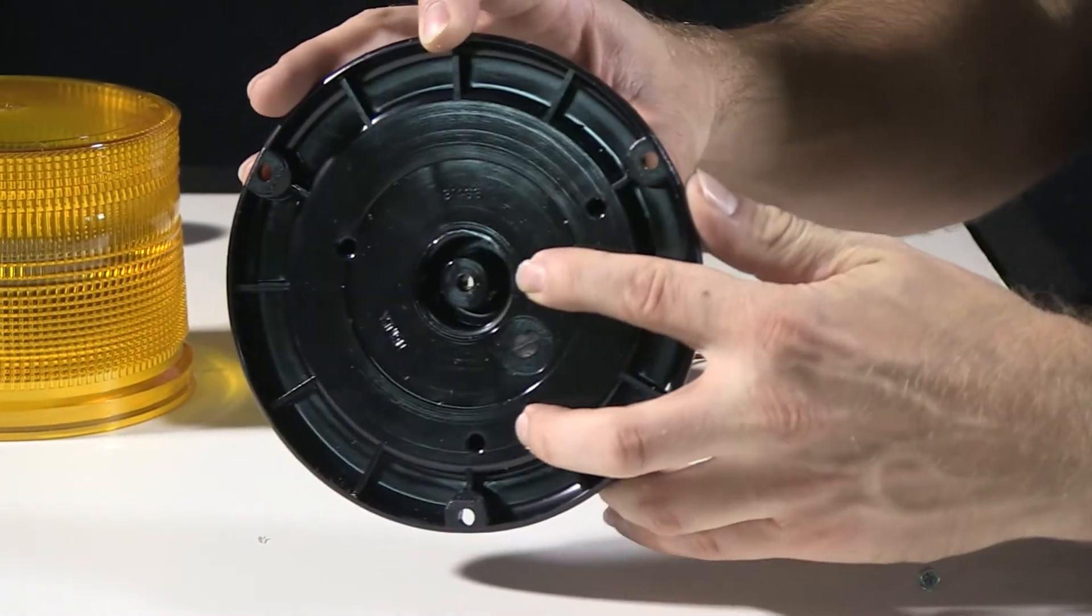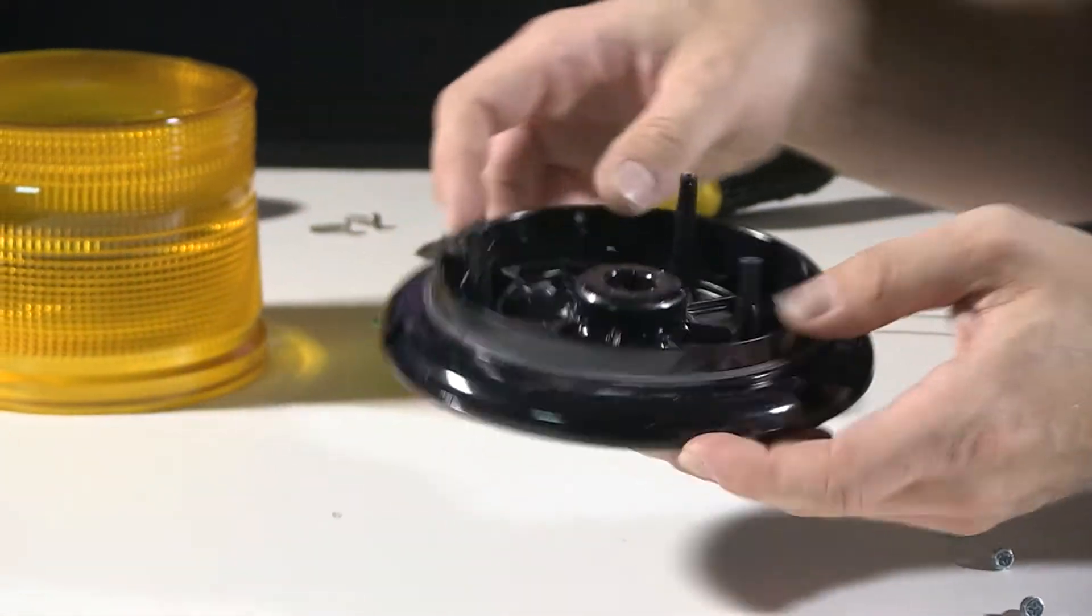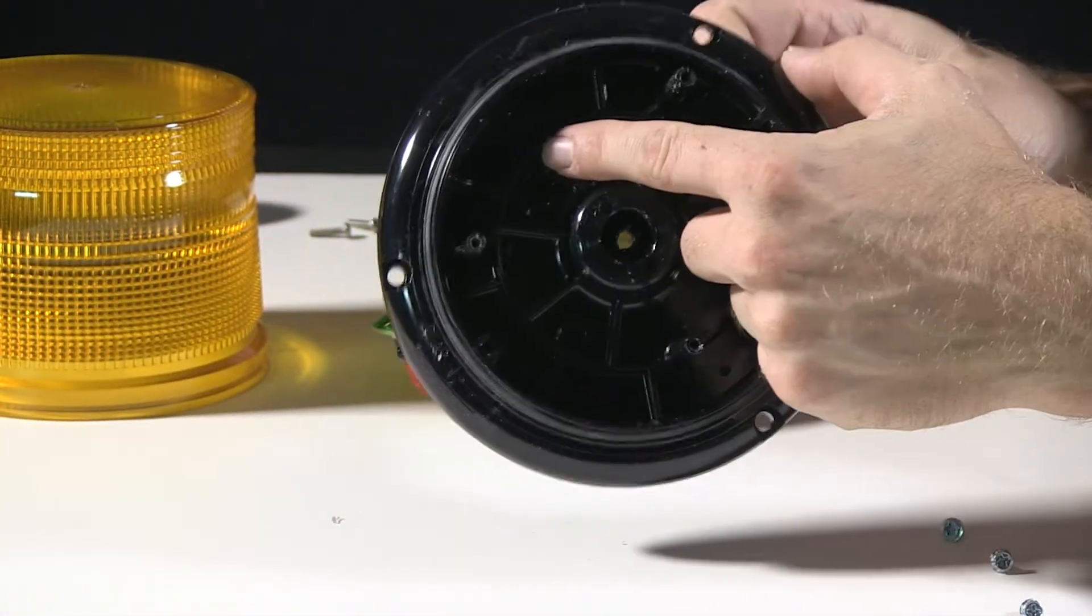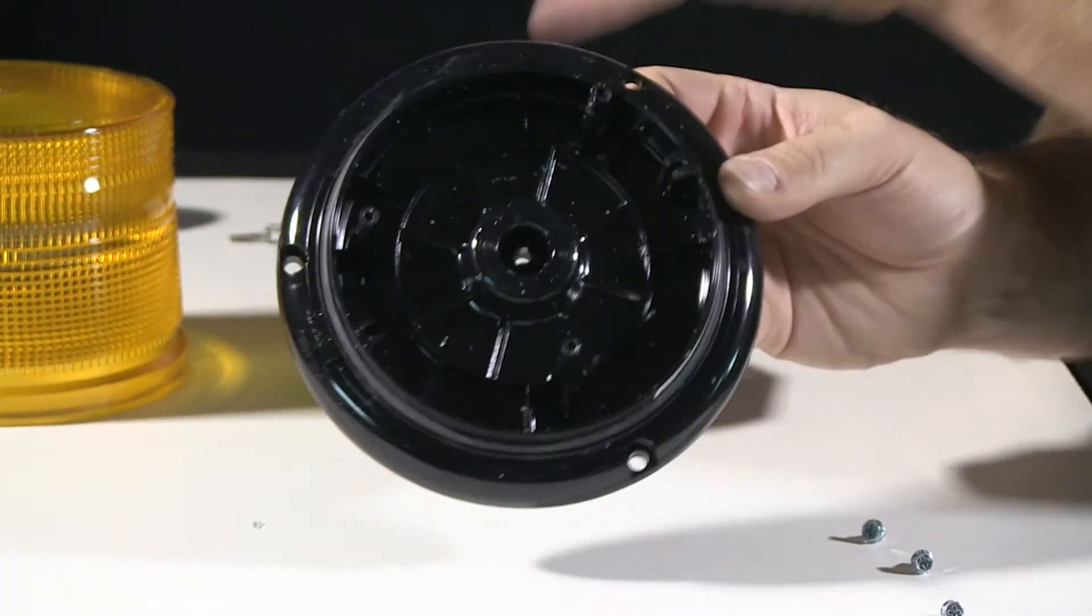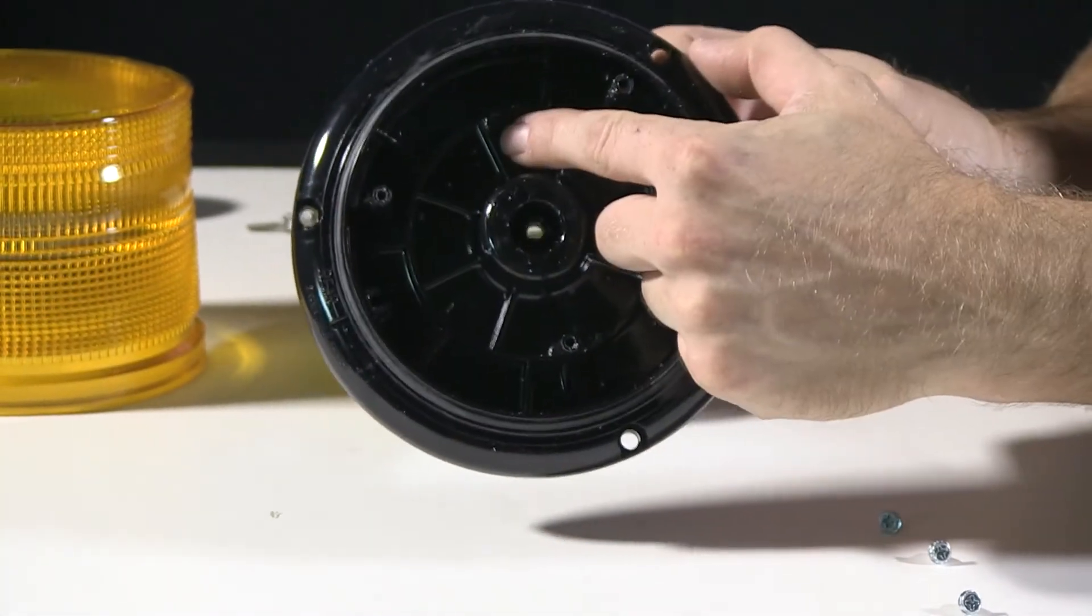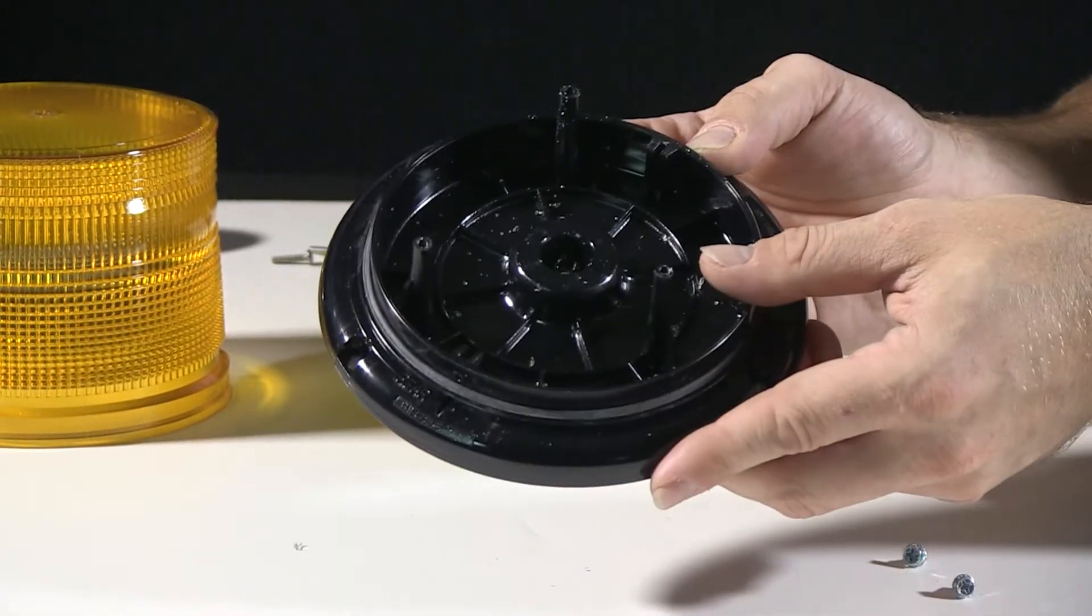Also incorporated in the base here is a one inch standard thread, if you wanted to screw it onto a pipe. Also, if you're ever going to install a magnet kit, you'll do these same steps here to disassemble your beacon and then get in here, follow the guide template, drill a hole for installing a magnet kit.